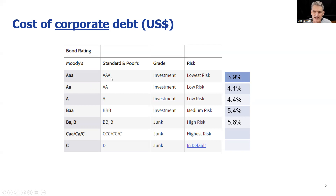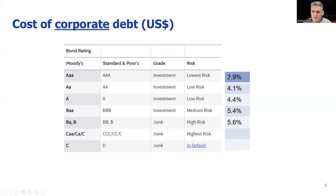There'll be a bunch of metrics that feed into this that the rating agencies assess to determine your grade. If you're triple A, that's probably going to give you an interest rate — the cost of corporate debt — of about 3.9% right now. Right now, 10-year US treasury bonds are trading at about 3%, so you can see that as you are more risky, the cost of debt is going to go up.